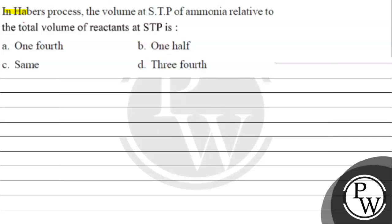Hello, let's read this question. The question says, in Haber's process, the volume at STP of ammonia relative to the total volume of reactants at STP is: